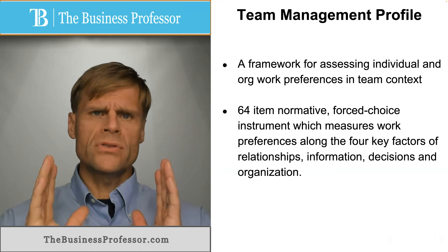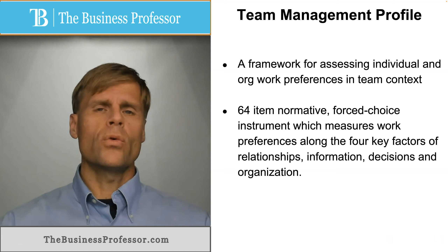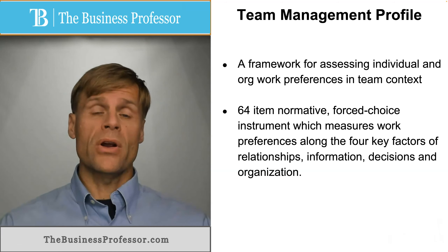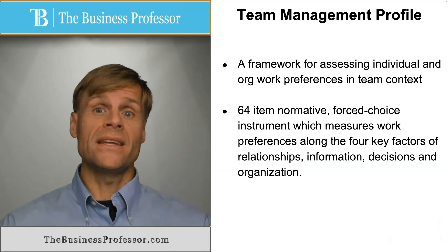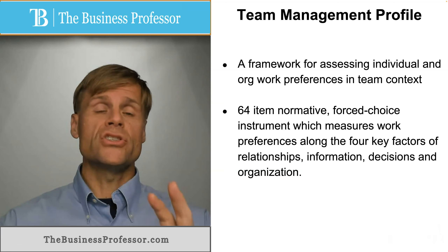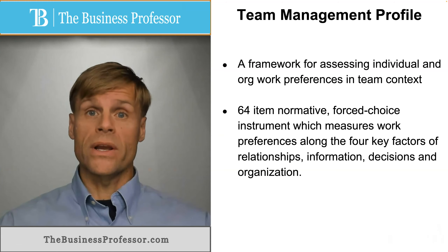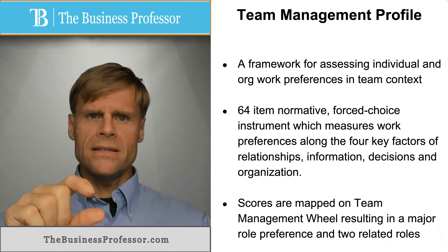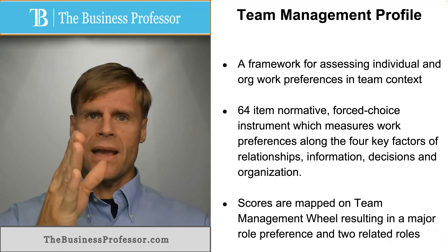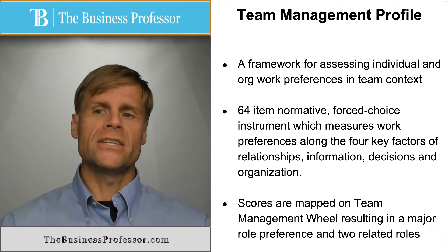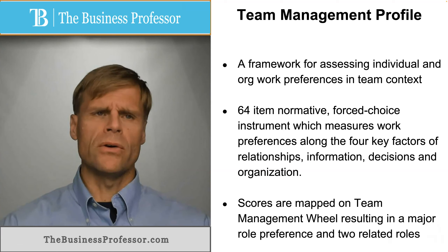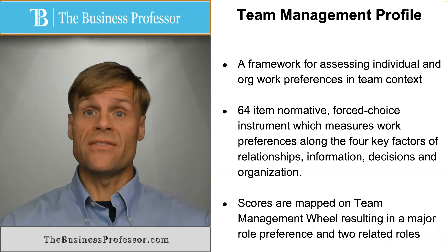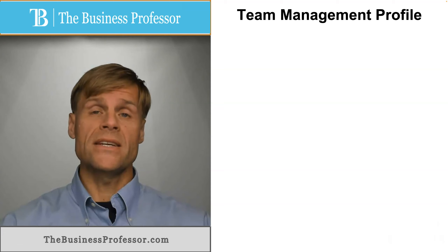Basically, it's a 64-question forced choice instrument that assesses your preferences along four key criteria: relationships, information, decisions, and organizational structure. They use these results to score you and map you along a management wheel, which shows your preference for a specific type of work within the organization.